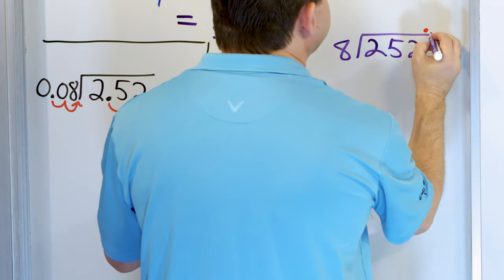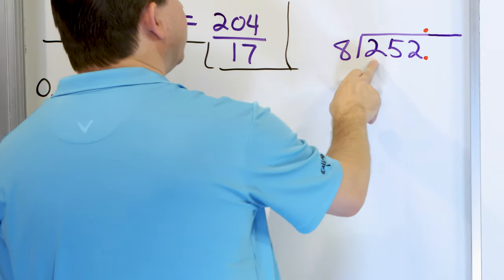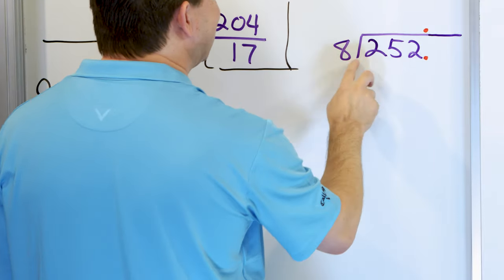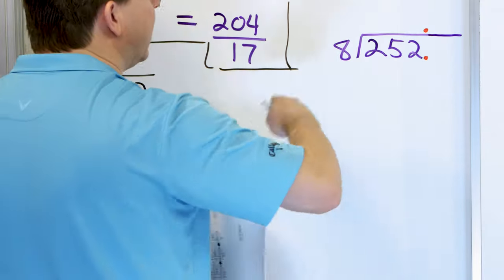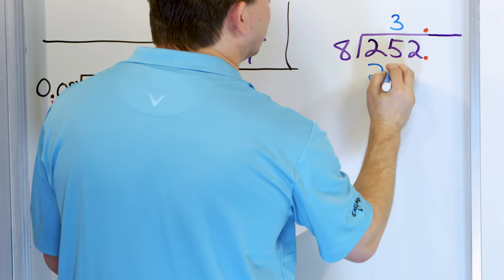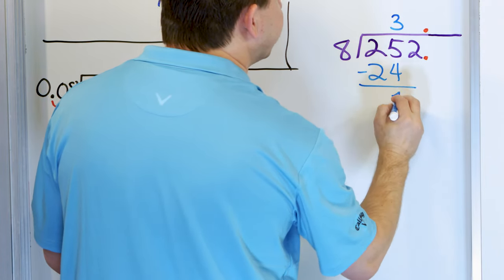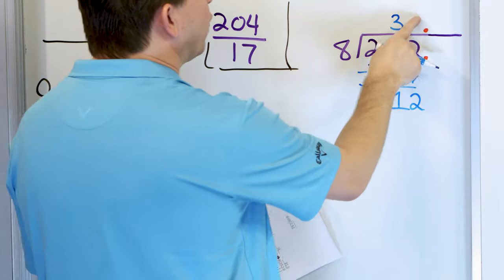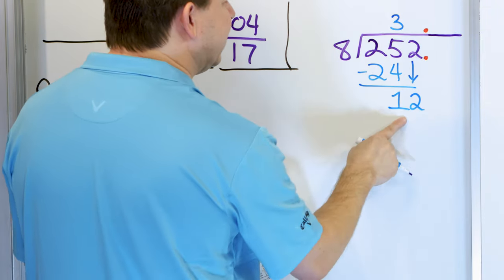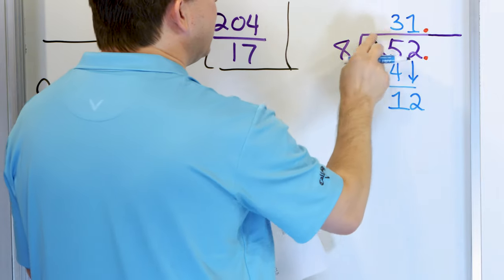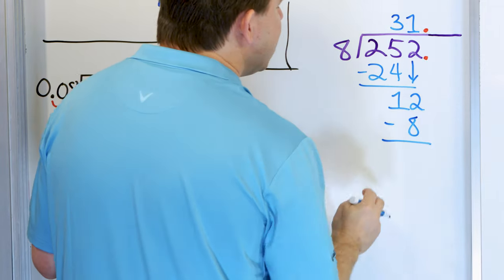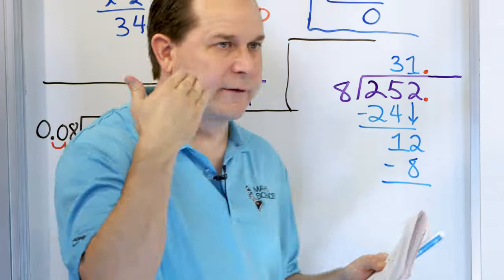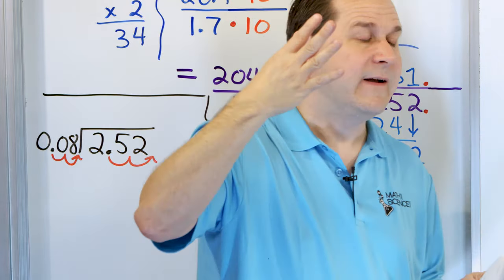Let's see how this shakes out. 8 cannot go into 2 — too small. Let's try going into 25: 8 times 2 is 16, 8 times 3 is 24 — so it can go 3 times into 25. 8 times 3 is 24. We subtract and get 1. After subtracting, grab the next digit — a 2. Now 8 times 1 is 8, 8 times 2 is 16 — that's too big. So it has to go only one time. 8 times 1 is 8. Subtract — 12 minus 8 is 4.